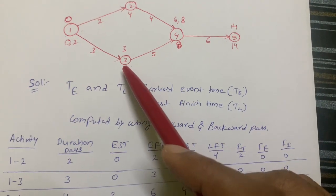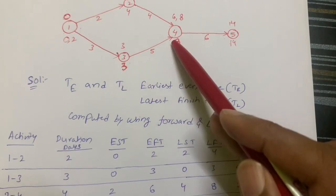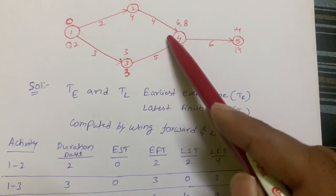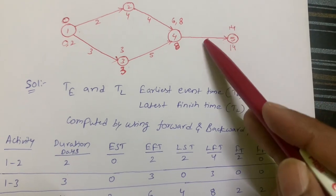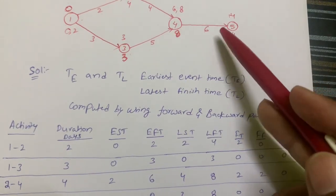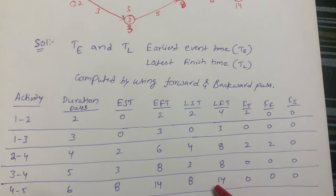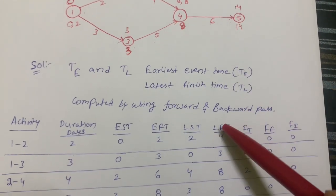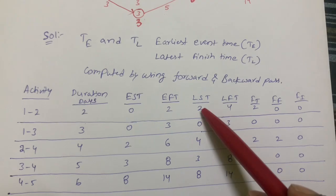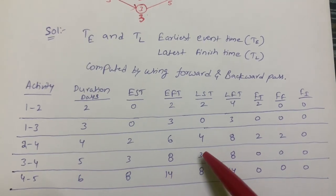For activity 1-to-3, LFT = 8 − 5 = 3. For activity 2-to-4, LFT = 14 − 6 = 8. For activity 3-to-4, LFT is also 14 − 6 = 8. For activity 4-to-5, LFT = 14. After calculating LFT, we derive LST = LFT − duration: 4 − 2 = 2, 3 − 3 = 0, 8 − 4 = 4, 8 − 5 = 3, and 14 − 6 = 8.